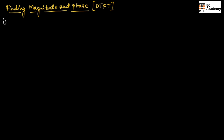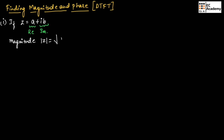For example, if Z is equal to A plus jB, here A represents the real part of the signal and jB represents the imaginary part of the signal. We can find the magnitude as |Z| = √(A² + B²), and the phase angle φ can be obtained by taking tan⁻¹(B/A), where B represents the imaginary part and A is the real part.